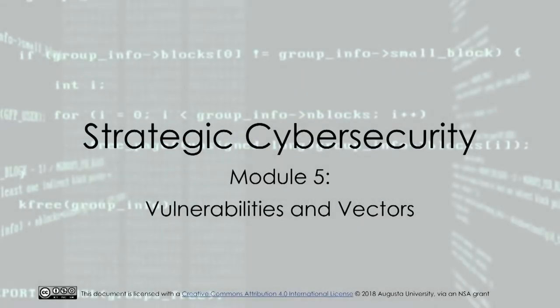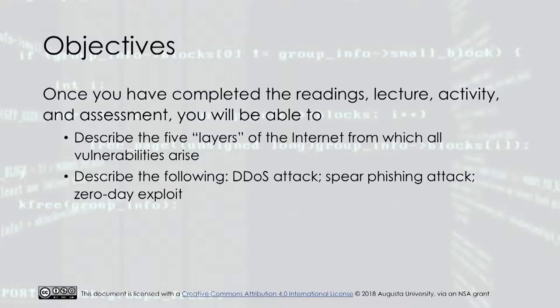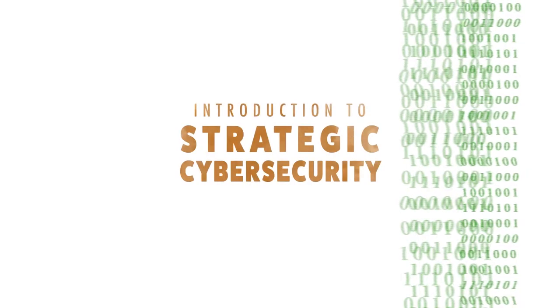Strategic cybersecurity module 5: vulnerabilities and vectors. Once you have completed the readings, lecture, activity, and assessment, you will be able to describe the five layers of the internet from which all vulnerabilities arise, and describe the following: DDoS attack, spear phishing attack, and zero-day exploit.